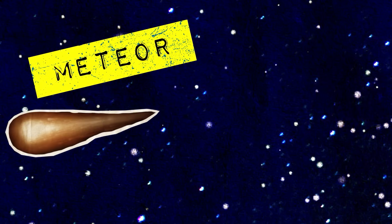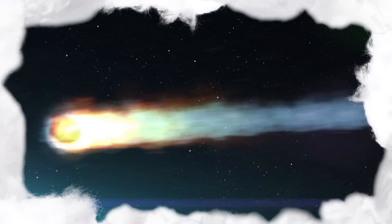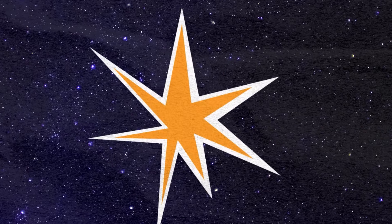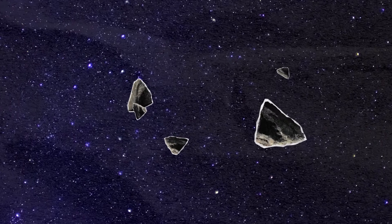A meteor is actually a streak of light in the sky caused by a meteoroid, which is basically a rock that is crashing through the Earth's atmosphere. Meteoroids are small fragments of rock created when asteroids and comets collide with each other in outer space.